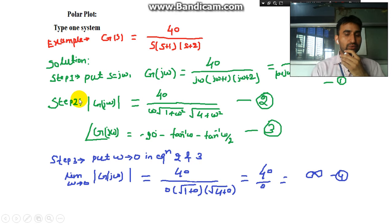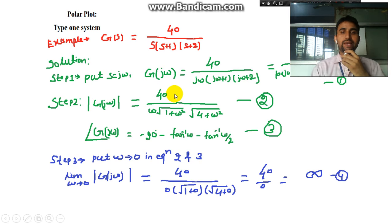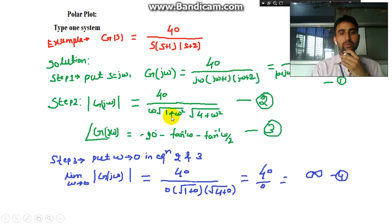Step 2: find the magnitude and phase. The magnitude is the modulus of G(jω). As discussed previously, for a term of the form x + jy the modulus is √(x² + y²). So for jω the modulus is ω, for (1 + jω) it is √(1 + ω²), and for (2 + jω) it is √(4 + ω²).